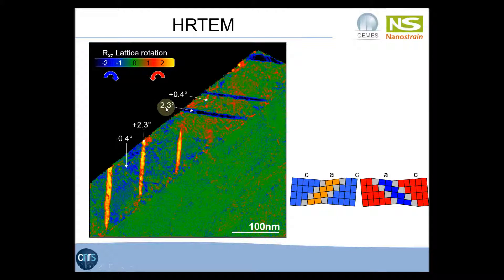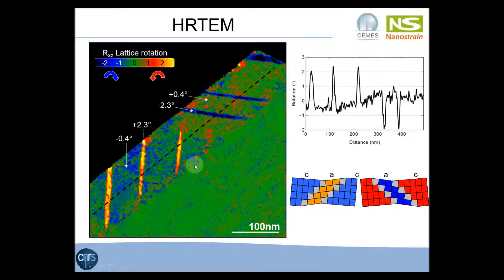The rotation is about 2.3 degrees. The C domains are also slightly rotated in the opposite direction by about 0.4 degrees. Extracting a profile along this line, we can see that the rotation is constant in the first region, then changes linearly in the middle region, and then becomes constant again in the last region.